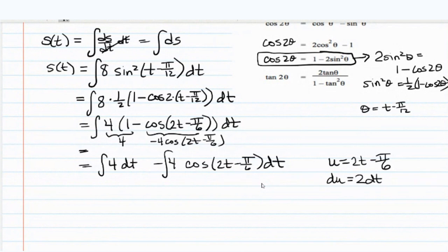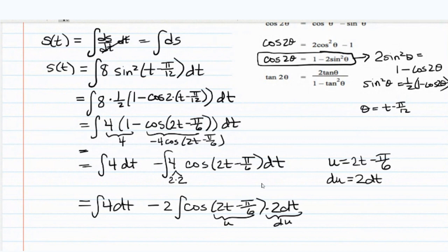So what I could do is, since I needed 2 dt, is I could break this factor, this 4, into 2 times 2. So I would have everything I need in my integral. I would leave one of the twos out front, and I would put the other two, just to make it clear, next to the dt. So we have du here, and we have u here.